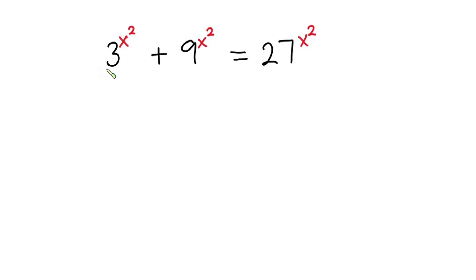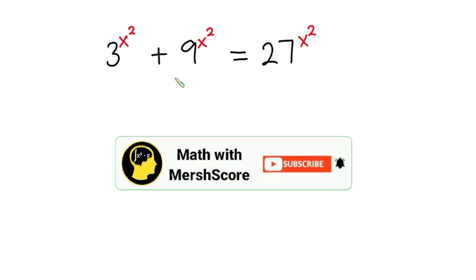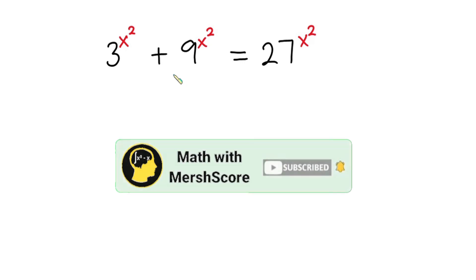Hello everyone. In this video, we have this nice exponential equation: 3 to the power x squared plus 9 to the power x squared is equal to 27 to the power x squared. We have to find all real solutions to this problem. Before we begin, pause the video and try first. If you are new here, consider subscribing and don't forget to like this video. Now let's get started.